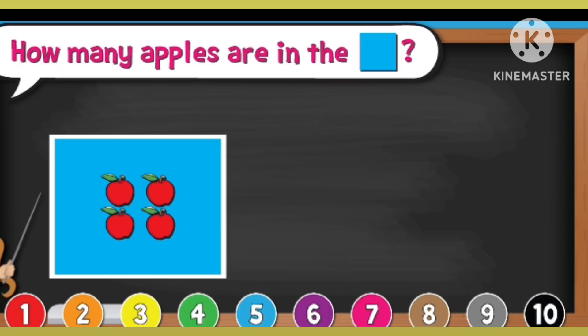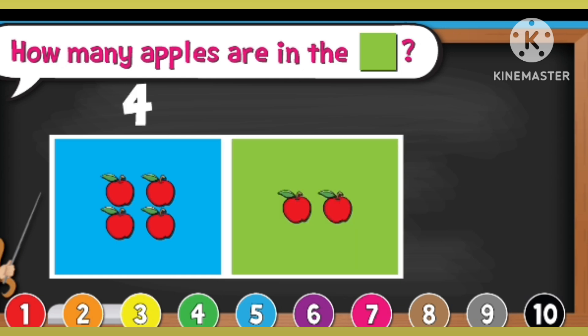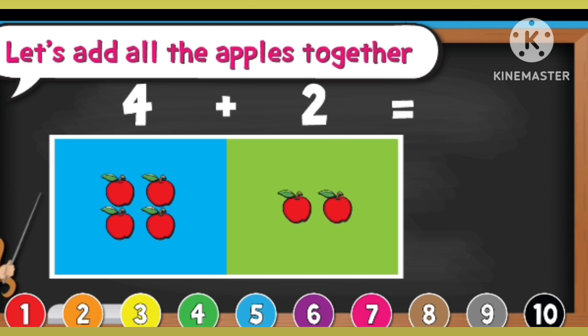How many apples are in the blue square? 1, 2, 3, 4. How many apples are in the green square? 1, 2. Let's add all the apples together. 4 plus 2 equal to 6.